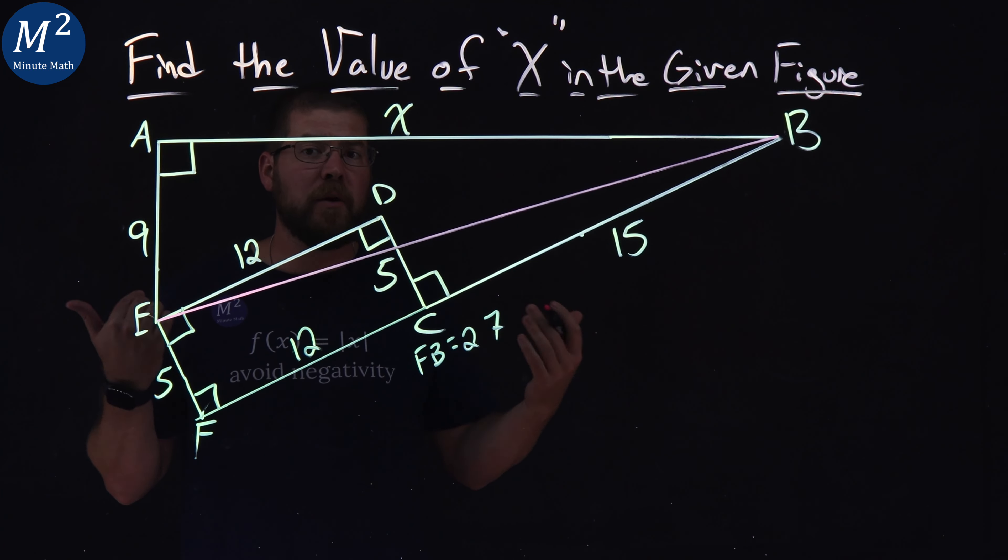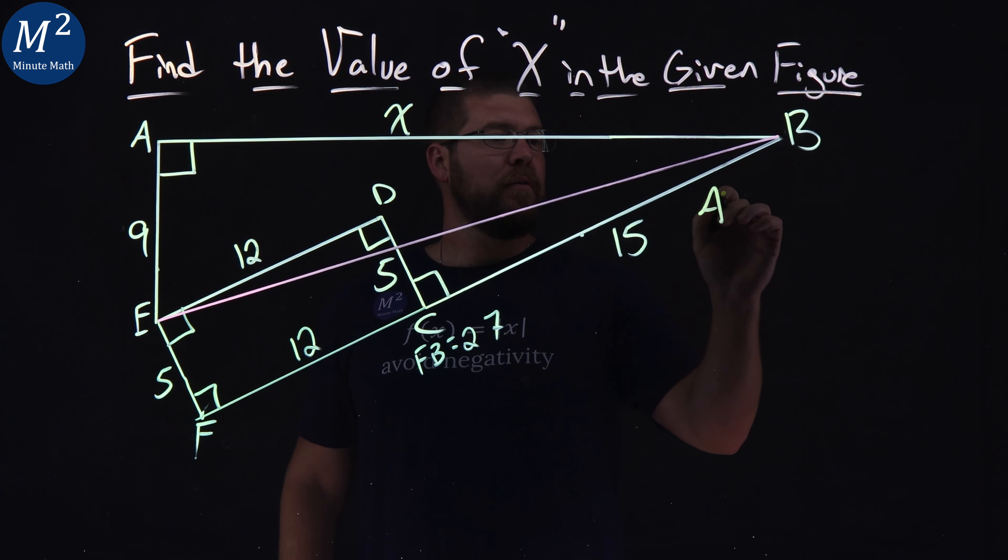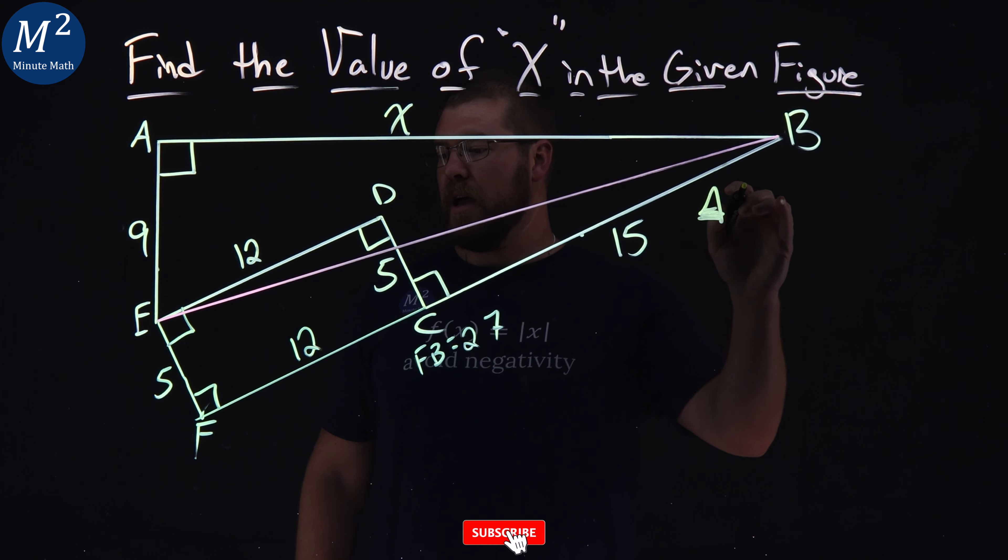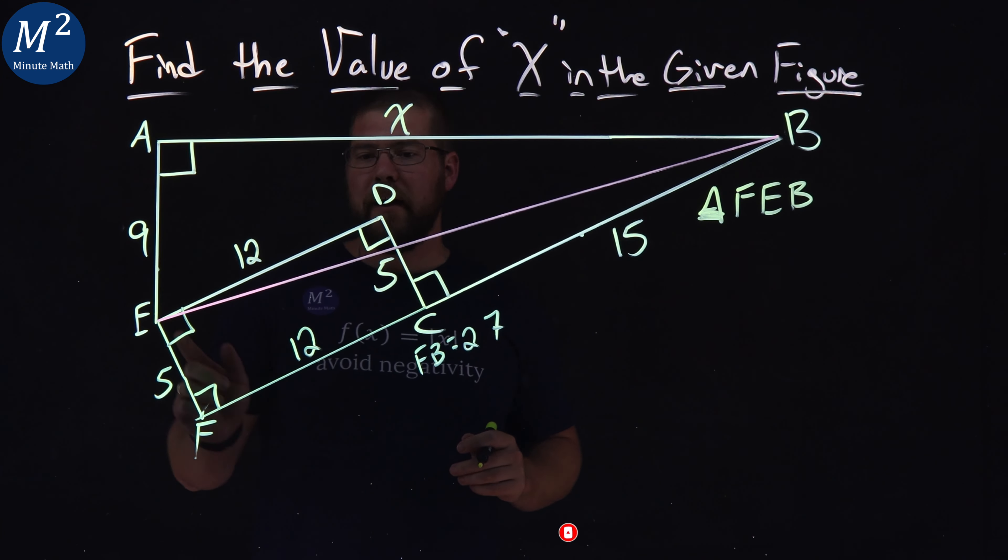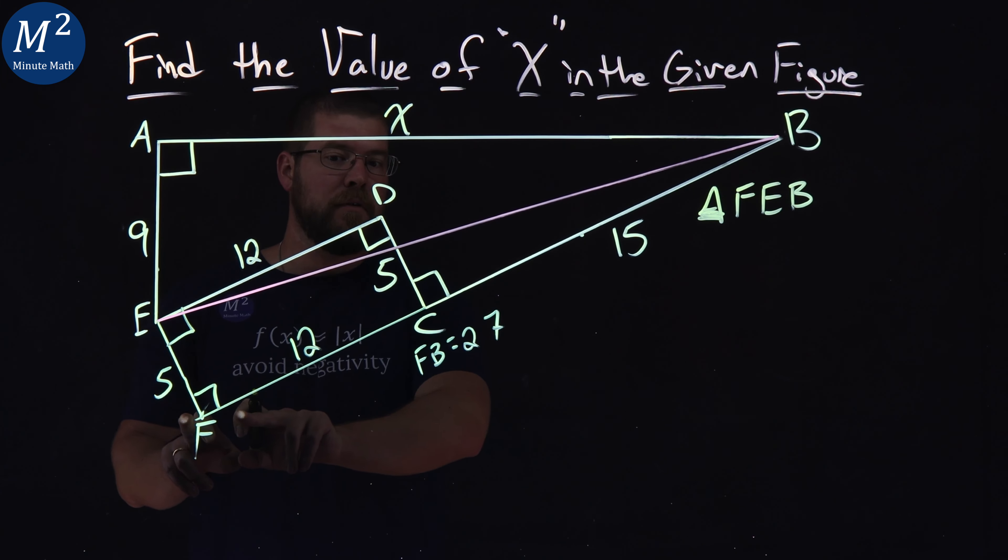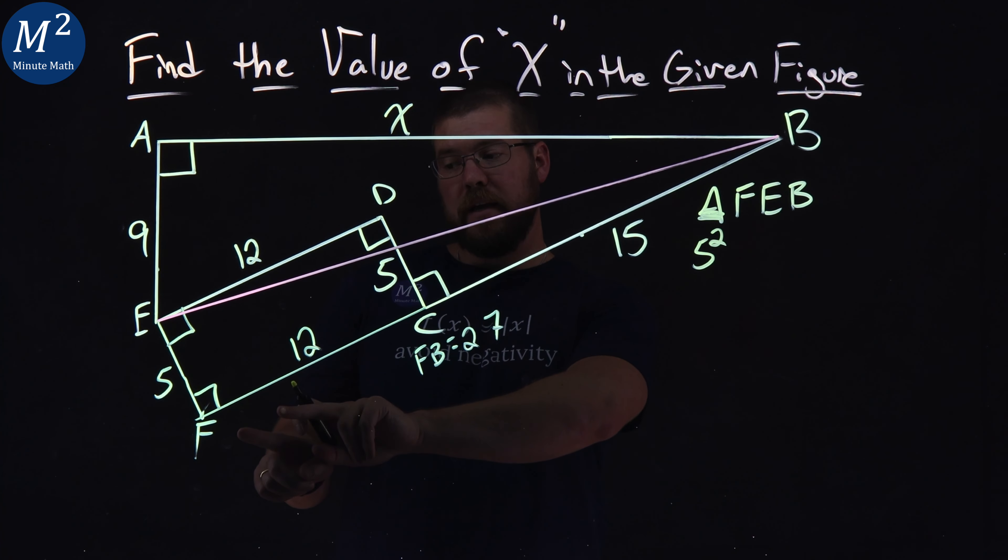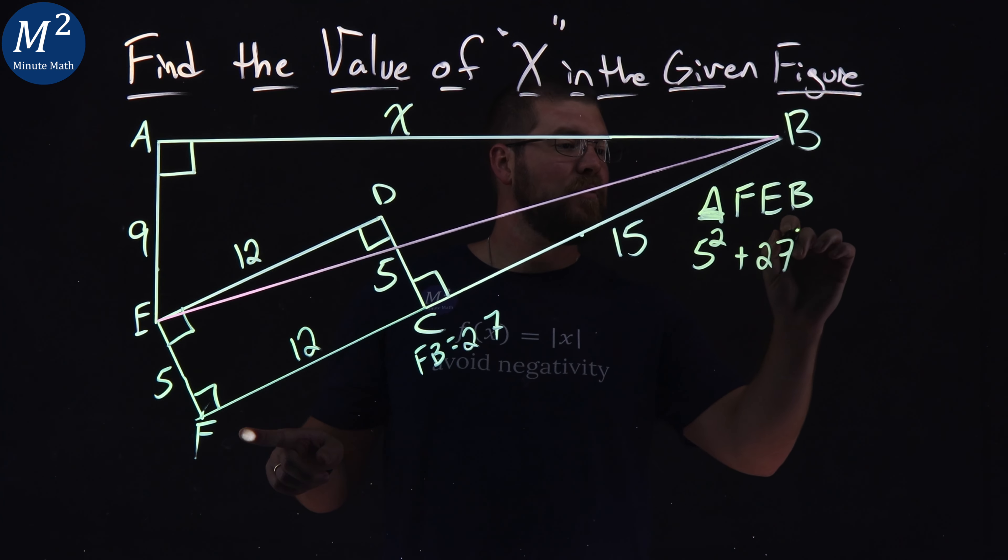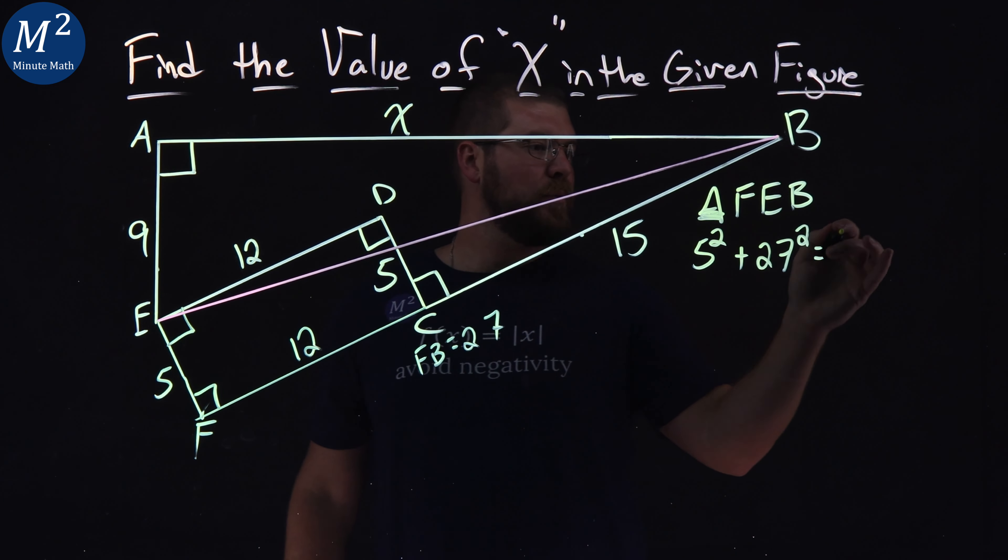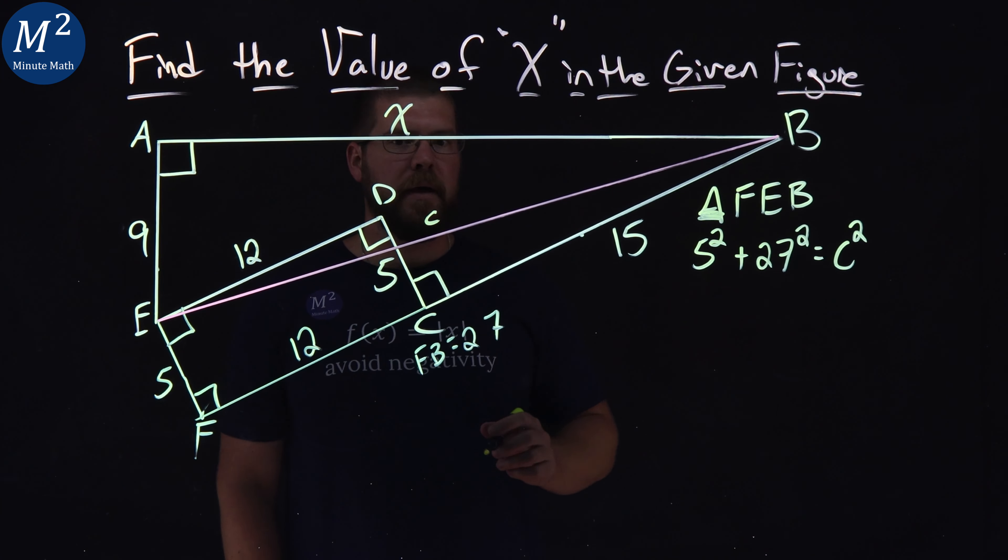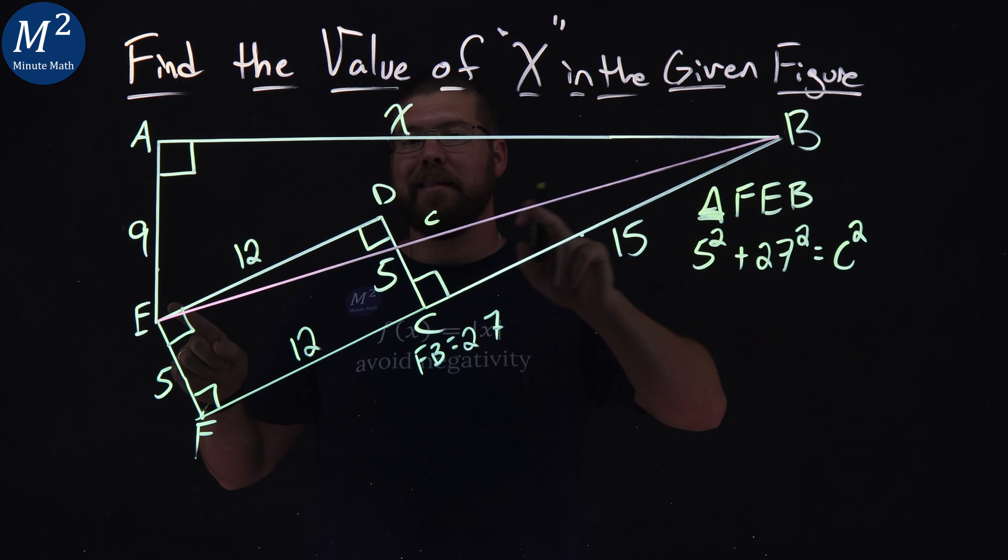Let's see this lovely line right here, EB. We want to find out what that length is. How can we do that? Well, we have, it's really just a large right triangle. We have triangle FEB. Triangle FEB is a right triangle, meaning the Pythagorean theorem works. So we have 5 squared, one of the legs, plus the other leg 27, plus 27 squared equals our hypotenuse. Let's just call it C here.